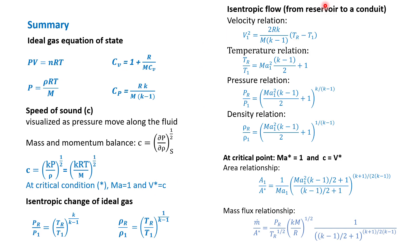When we address isentropic flow, we derived focal relations: velocity relationship, temperature relationship, pressure relationship, and density relationship. To calculate the mass flow rate, we developed a hypothetical condition of a critical point. Using a mass balance, we derived equations for the ratio of area at point one to the critical point, and the mass flux relationship.